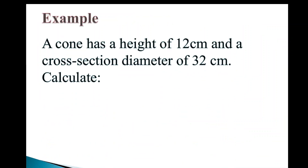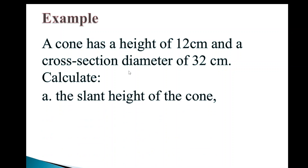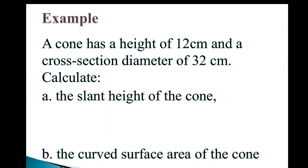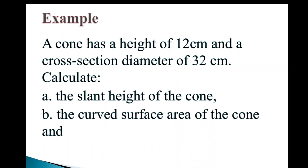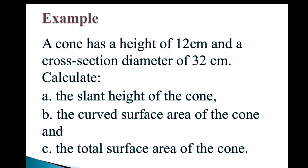Let's look at an example. A cone has a height of 12 centimeters and a cross-section diameter of 32 centimeters. Calculate: A) the slant height of the cone, B) the curved surface area of the cone, and C) the total surface area of the cone. So we have a three-part question here.